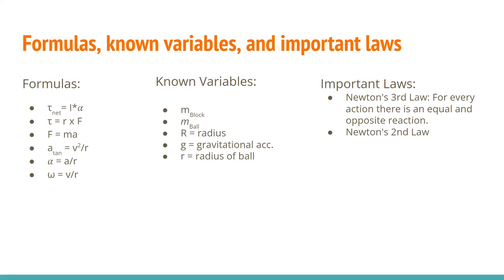Moving into our known variables, we have the mass of the block, the mass of the ball, big R which is the radius from the block to the center of the turntable, g which is our gravitational acceleration, and little r which is the radius of our ball. Some important laws are Newton's third law — for every action there is an equal and opposite reaction, which relates to our Newton's third law force pairs used later on — and Newton's second law, which is force equals mass times acceleration.